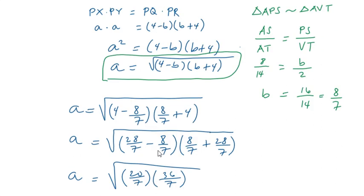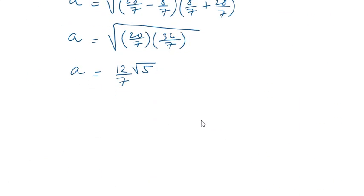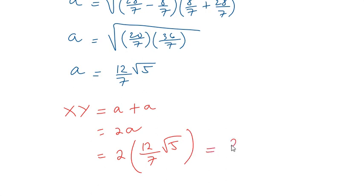Let's go back to the figure. XY is just the same as PX plus PY, in other words A plus A. So our final answer is XY equals 2A or simply 2 times 12 over 7 square root of 5. Multiplying, we get the final answer, 24 over 7 square root of 5 as the length of XY. See you again next time.